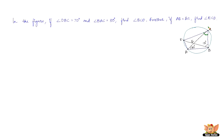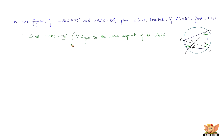First, consider the chord CD. Angles CBD and CAD both lie in the same segment of the circle, so those angles are equal. Therefore, angle CBD equals angle CAD, which equals 70 degrees — because angles in the same segment of the circle are equal.